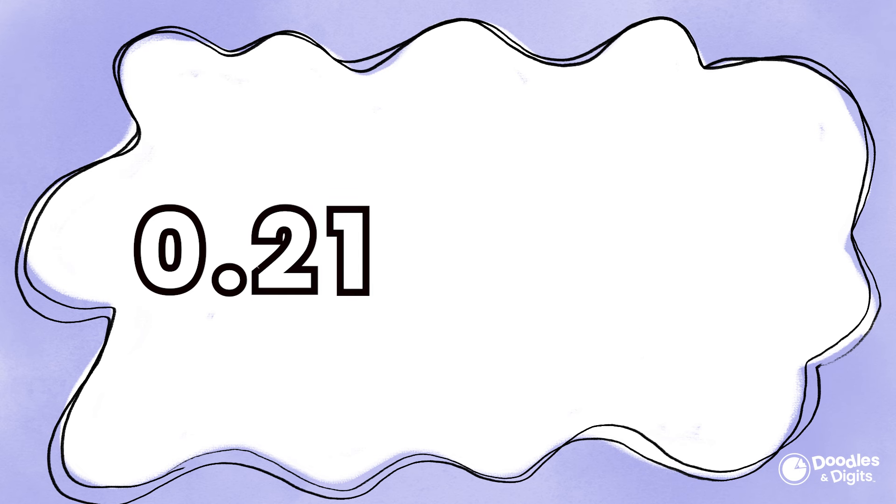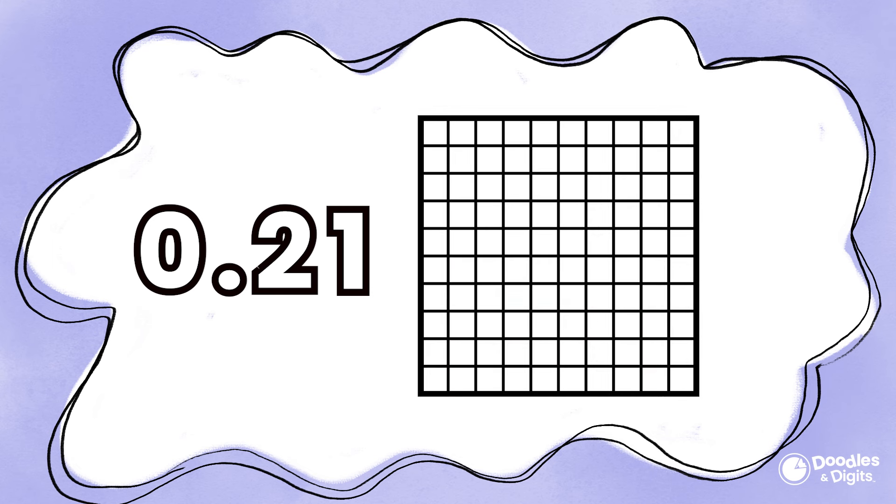Let's try this one, 0.21 or 21 hundredths. I'm going to break my whole into hundredths, then I'm going to shade in 21 hundredths.